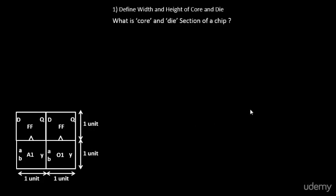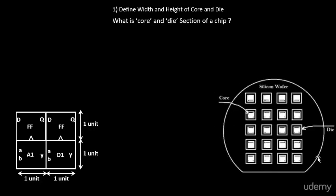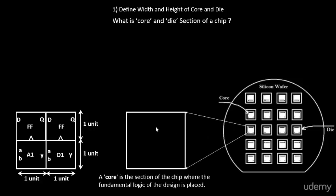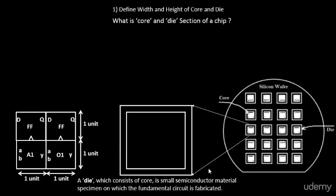Let's look at the core and die of a section of a chip. This is your silicon wafer on which you implement all your logic. One section is referred to as the die, and inside the die you have the core. The core is where you place the fundamental logic, and the die encapsulates the core — this is the piece of area on which your circuit is built. Your circuit will not exit this area. We imprint this die multiple times on the silicon wafer to increase throughput.